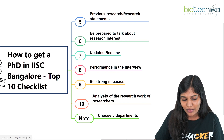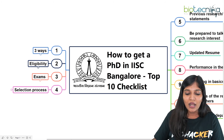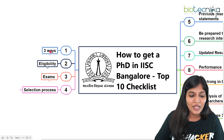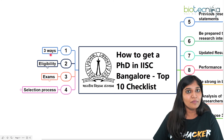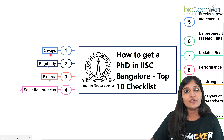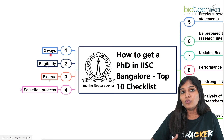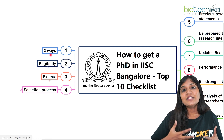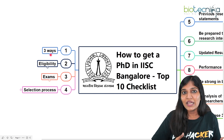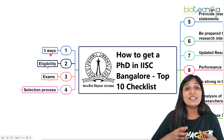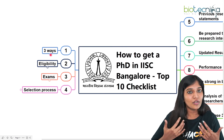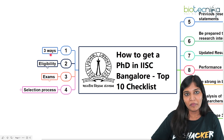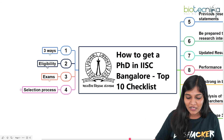For Integrated PhD interviews, there will be about 10 people in the boardroom; for PhD after master's, it will be three to four people. If they ask about their own research, be able to give at least a manageable answer. The interview is not overly tough if you know your basics, and the professors will help you. If you don't know an answer, honestly say you don't know — they will help you learn.